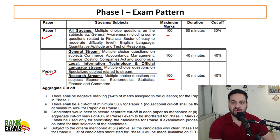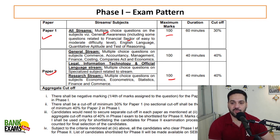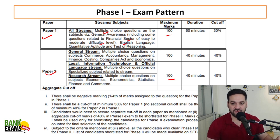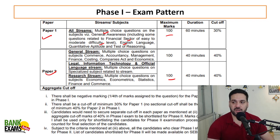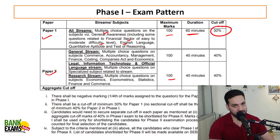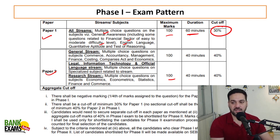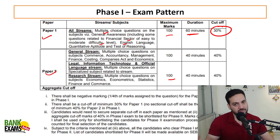In paper one, there is general awareness — with special focus given to the financial sector — along with English language, quantitative aptitude, and reasoning ability. 100 marks and 60 minutes are allotted, and the cutoff is 30%. If you are able to score 30% in paper one and 40% in paper two, you will be able to appear for phase two.